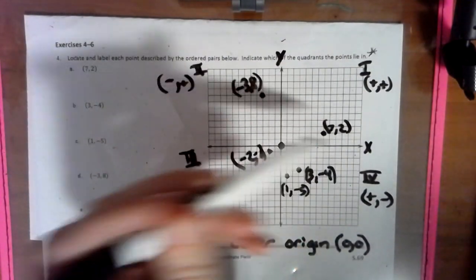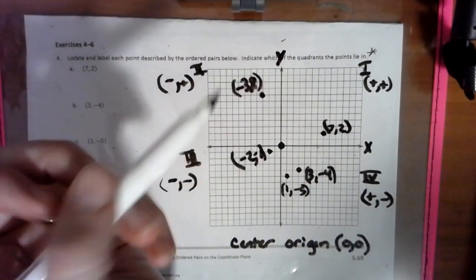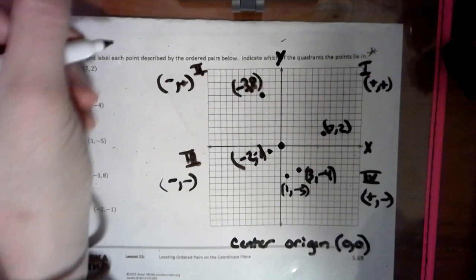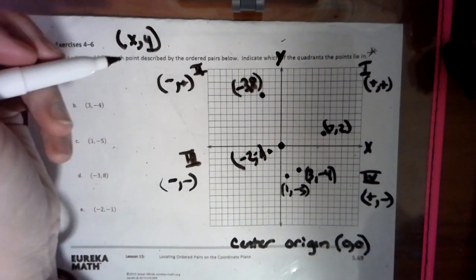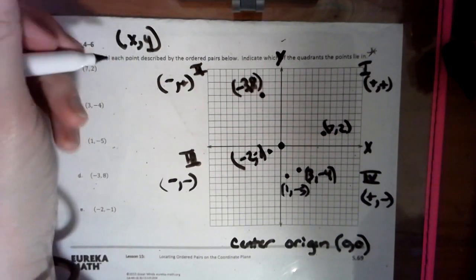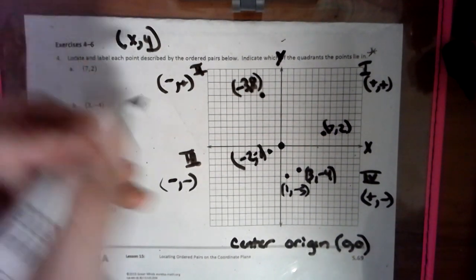Now remember, we always travel our x-axis before our y-axis. And this is something to remember. In the ordered pair, this is an ordered pair. In the ordered pair, the first thing listed is your x value.